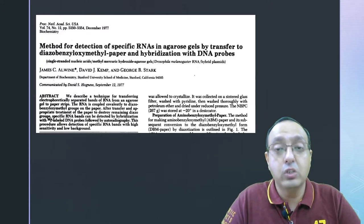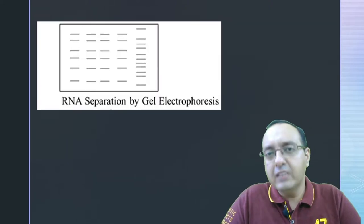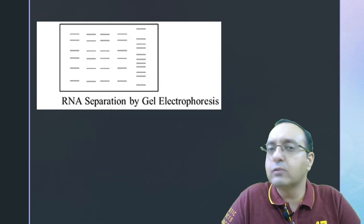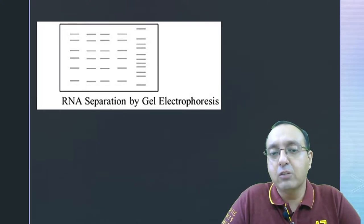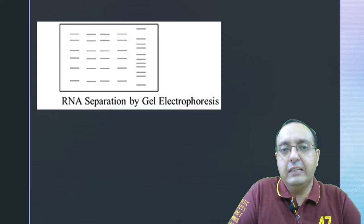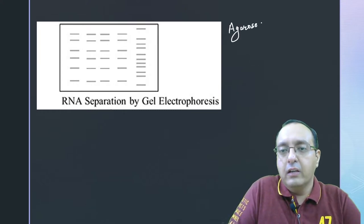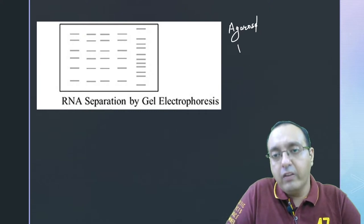This was a hugely revolutionary technique and it is very similar to Southern blotting as well as Western blotting. Here we have RNA separation by gel electrophoresis. It can be done by either agarose gel electrophoresis or if the RNA molecules are small then we can use PAGE polyacrylamide gel electrophoresis.